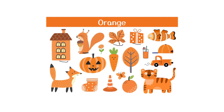Look at this gift — the color of the gift is orange. And this is a fish and its color is orange. Look at the pumpkin, it is orange. The carrot, the tree, the orange juice, the truck, the cat, the orange, the butterfly, the socks, and the fox — all of these things have the orange color.